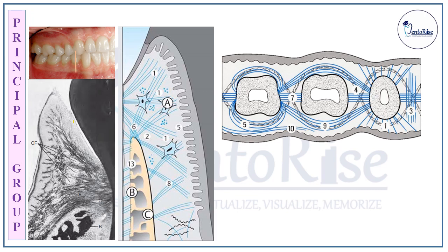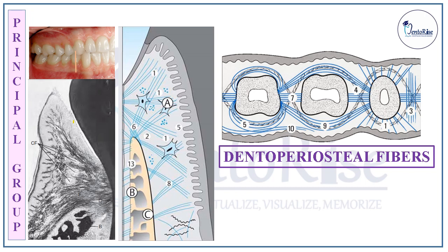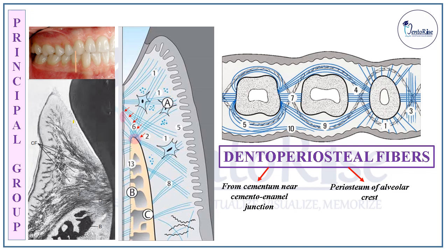The third category of fibers within the principal group are the Dento-periosteal fibers. From the name, these fibers start from the cementum, particularly near the cemento-enamel junction, and end into the periosteum of the alveolar crest. Thus, these fibers anchor the tooth to the bone and thereby protect the periodontal ligament.